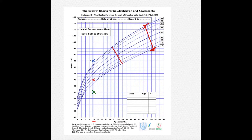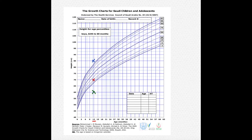Below the lower curve is short stature, and above the upper curve is tall. This also applies to head circumference — if the measurement is above the curve, it means the baby has a big head, like macrocephaly. If it's below the curve, like the green one, it means microcephaly. Similarly for weight: above the curve is larger than normal, below is smaller than normal.